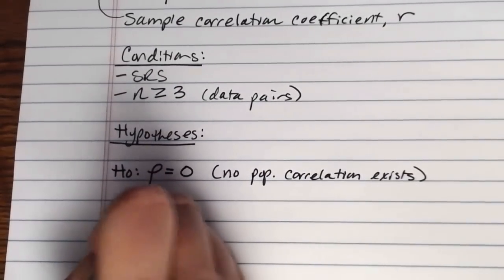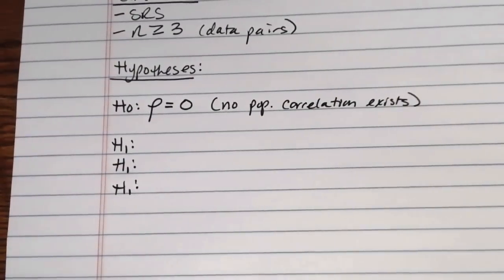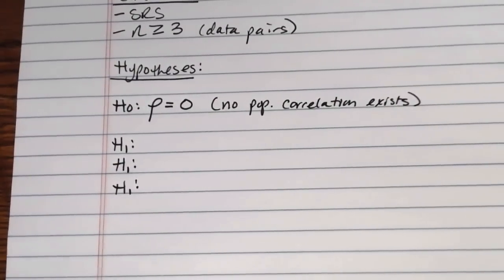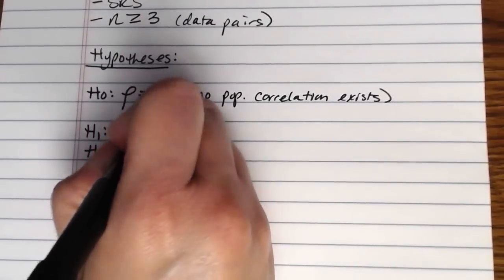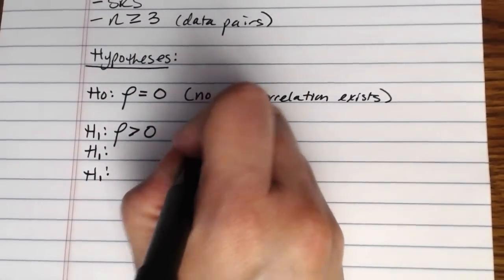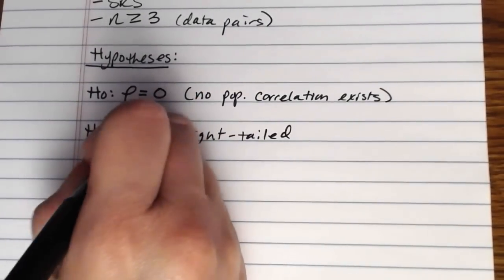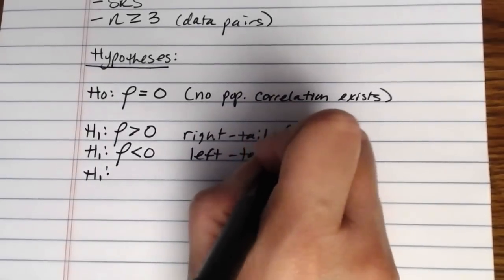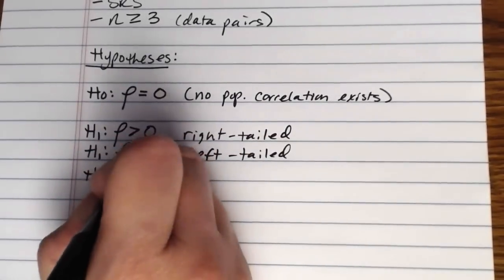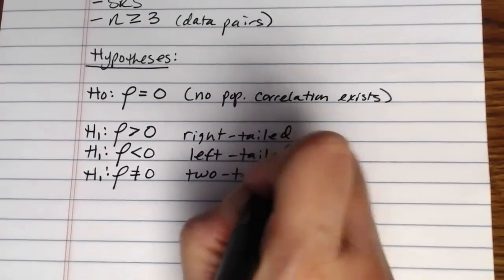Then for our alternate hypothesis, we have three different options, just like always, and which option you choose for your test will depend on the data that you're working with and what it is that you're trying to test. You will either be testing that rho is greater than zero, and that would be a right-tailed test. You'll be testing that rho is less than zero, that would be a left-tailed test. Or you'd be testing that rho is not equal to zero, that would be a two-tailed test.